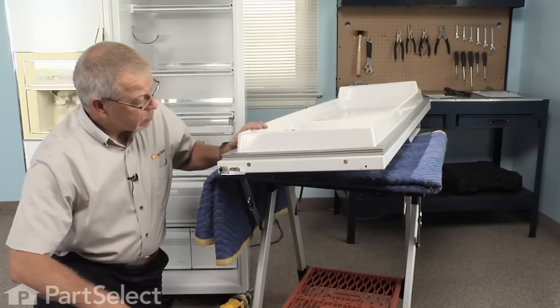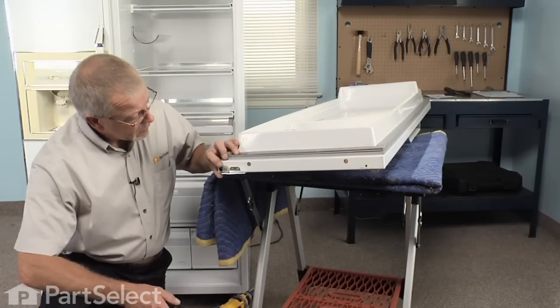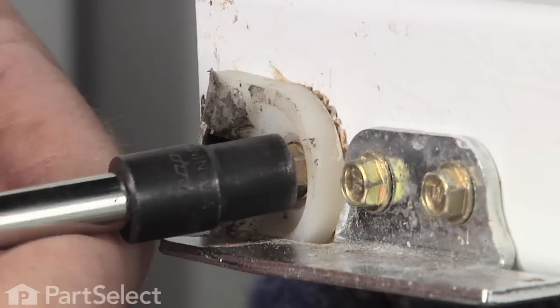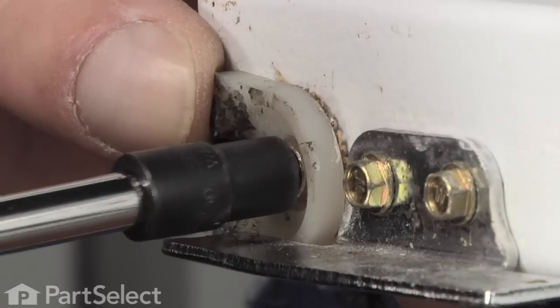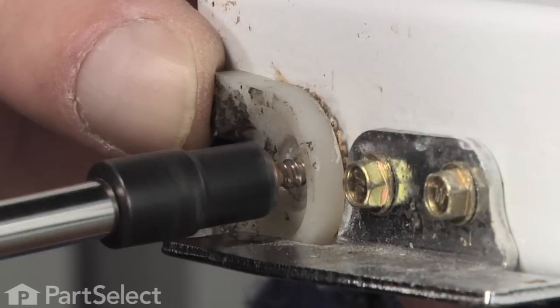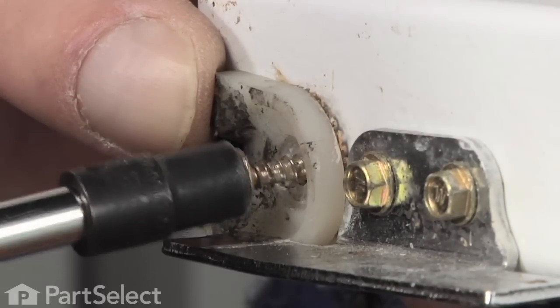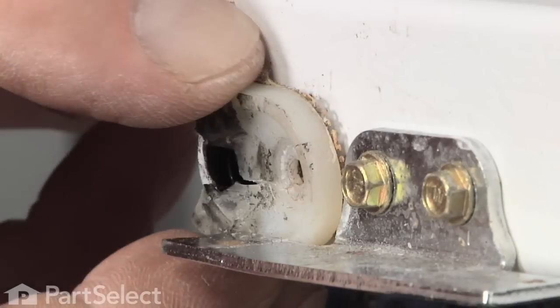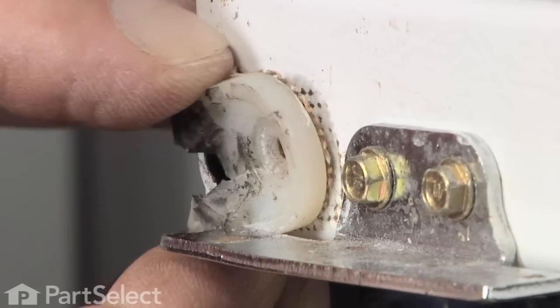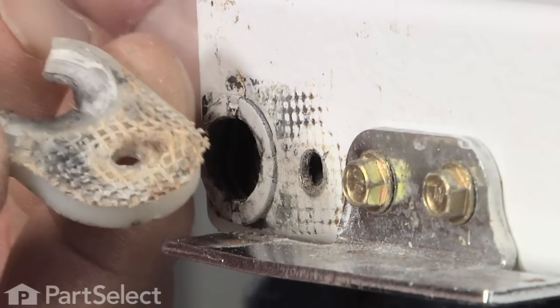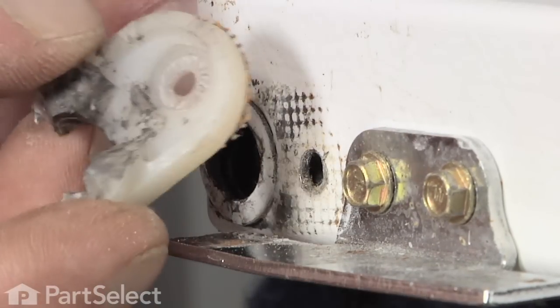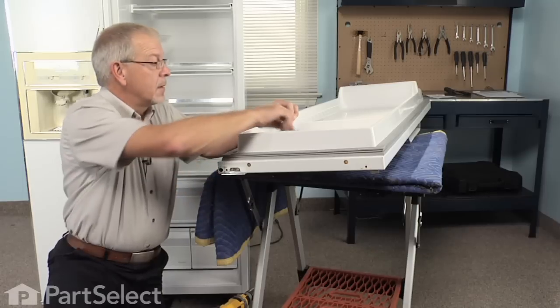Now that we have the door on a suitable work surface, we can remove the upper cam. It should be a quarter inch hex head screw holding that in place. Remove the old cam and shim, discard them.